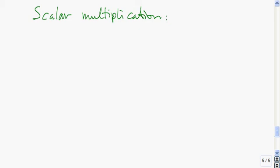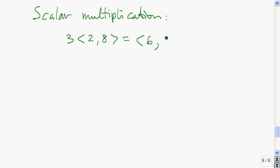The last operation I want to talk about is scalar multiplication — just multiplying a vector by a number. To do this operation, we take the number, the scalar, and multiply it to each component. So it's 2 multiplied by 3, and then 8 multiplied by 3.